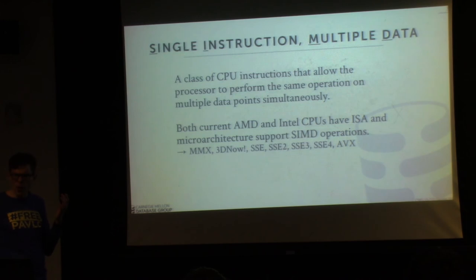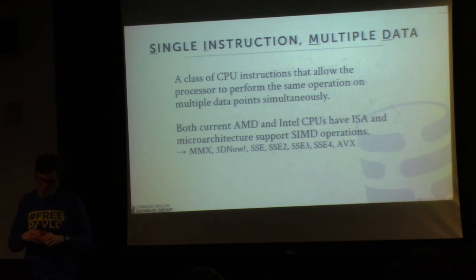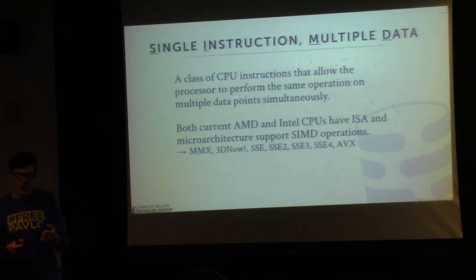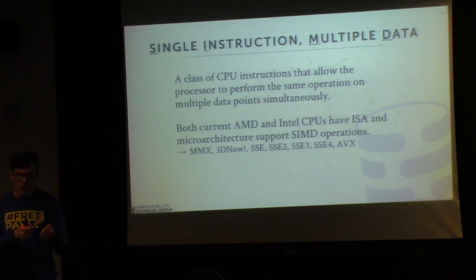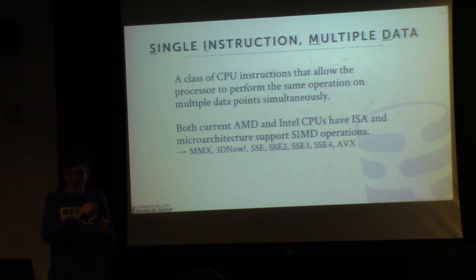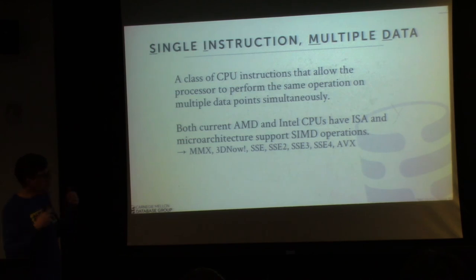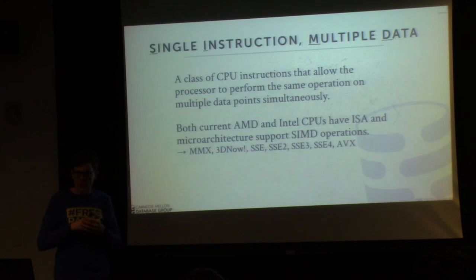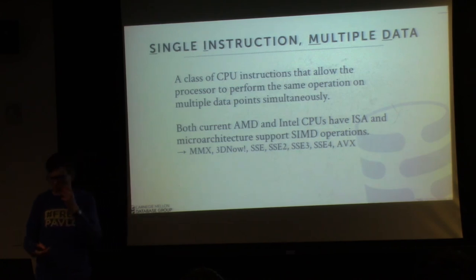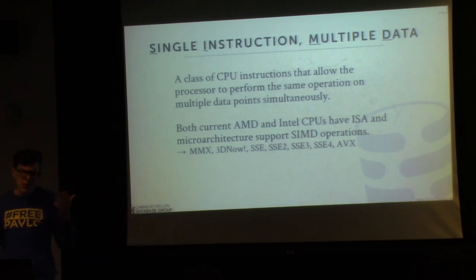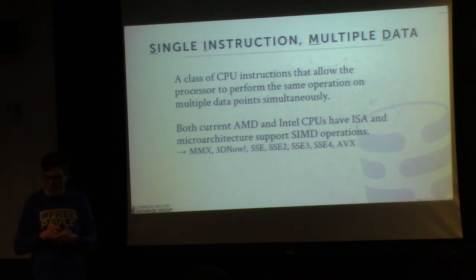Everyone here probably should already know what SIMD is from 418 or 618. SIMD stands for Single Instruction Multiple Data. There are a class of CPU instructions that allow an application to have the processor invoke the same instruction multiple times simultaneously in parallel on different pieces of data. This is different from what we normally think of when writing programs in terms of SISD instructions — Single Instruction, Single Data item. This comes from Flynn's taxonomy of CPU architectures from the 1960s.